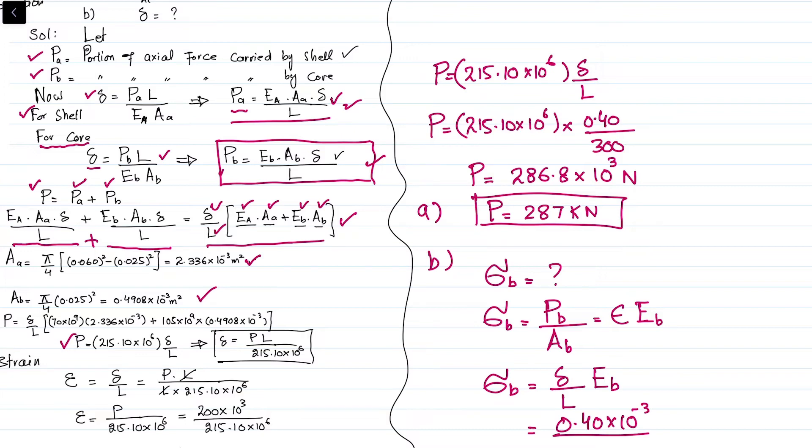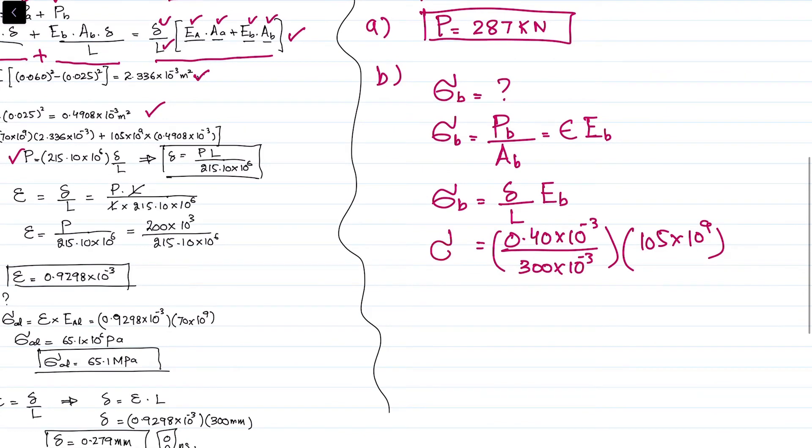The length was 300 millimeters, so 300 times 10^-3, times E of B which is 105 gigapascals. When you calculate this, you will get stress in brass equals 140 times 10^6 pascals.